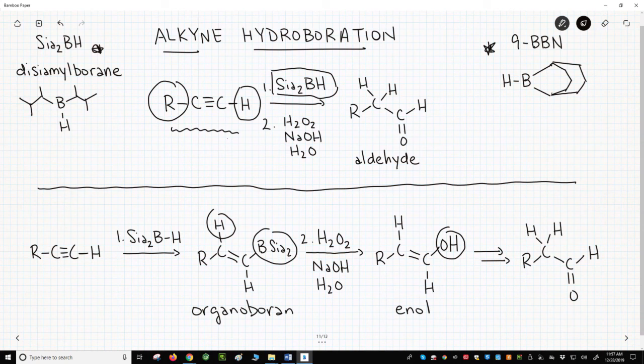As we know, enol tautomers are not as stable as the carbonyl form, the keto form. The enol tautomerizes to a carbonyl. In this case, the carbonyl is on the end of the chain, so it's an aldehyde instead of a ketone.